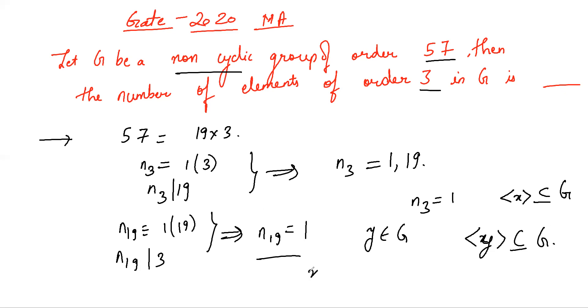Now xy belongs to G and I claim that the order of xy is 57, which would imply that our group is cyclic. The possible orders of xy are 1, 3, 19, or 57.